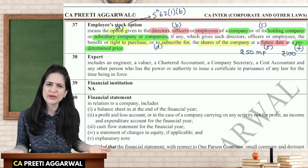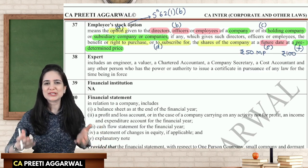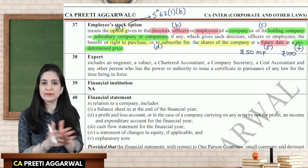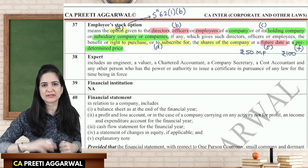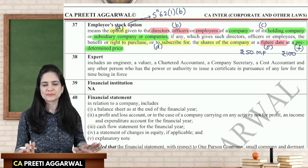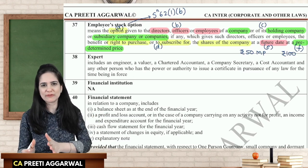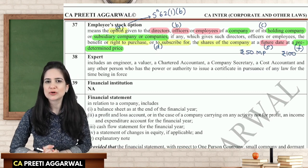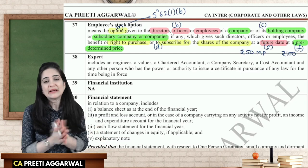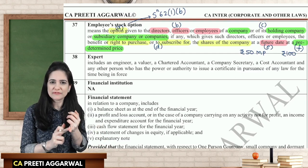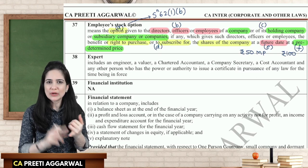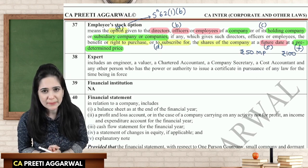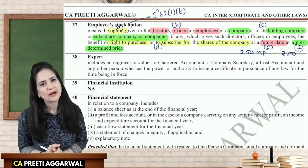Employee stock option and sweat equity are employee retention tactics used by companies. It is beneficial to employees too — they get shares at a predetermined price and can sell in the market at a higher price. There is a gap between investing and exercising the option, which we will discuss in section 62 later. For now, remember: employee stock option is an option given to directors, officers, and employees of a company, holding, or subsidiary to purchase or subscribe for shares in the future at a predetermined price.